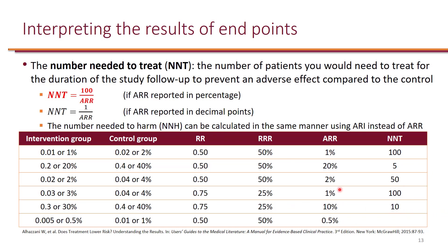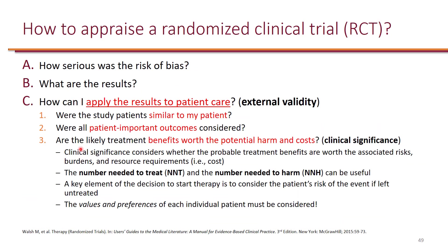These are hypothetical numbers to illustrate the calculations. Lastly, are the likely treatment benefits worth the potential harm and cost? This is where we assess clinical significance — you can look at cost and also use number needed to treat and number needed to harm to balance the risk versus benefit.